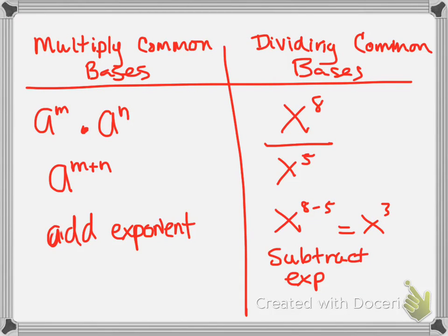All right, so this is section 4-8. Yesterday we talked about when we multiply common bases, we add the exponents. Today our objective is division and exponents, negative exponents, and zero exponents.